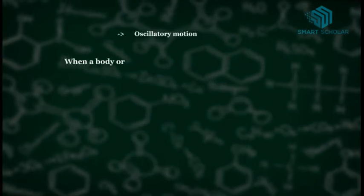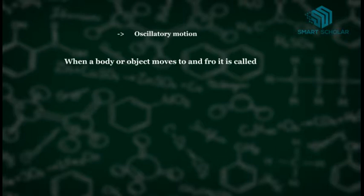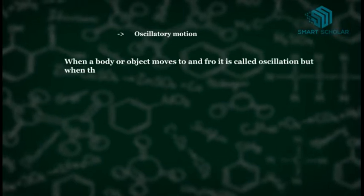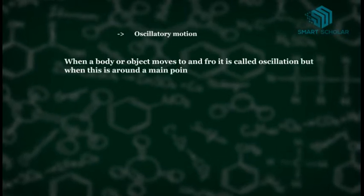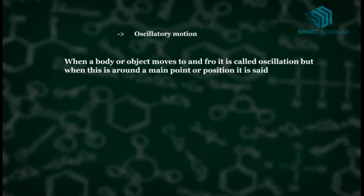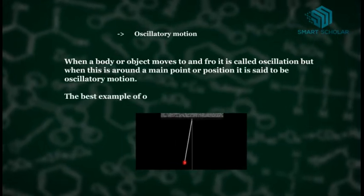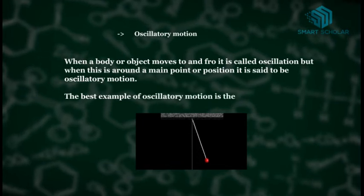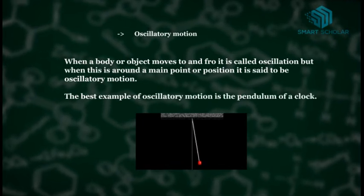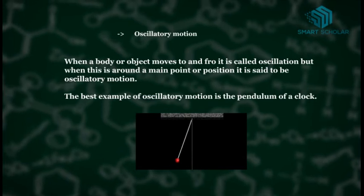Oscillatory motion: When a body or object moves to and fro, it is called oscillation. But when this is around a main point or position, it is said to be oscillatory motion. The best example of oscillatory motion is the pendulum of a clock.